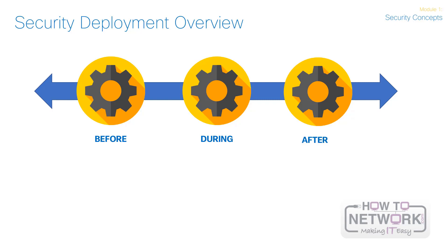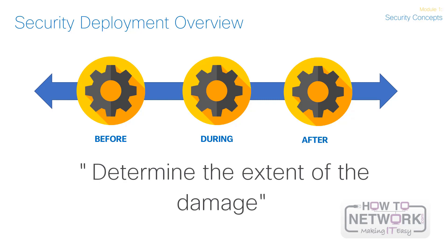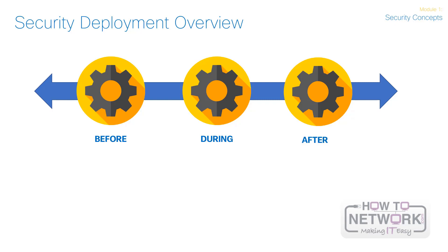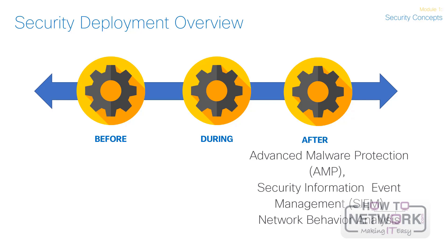The third part is the after phase. Invariably, the attacks will be successful and you will need to determine the extent of the damage to contain the event, remediate it, and bring operations back to normal. You also need to address a wide range of attack vectors with solutions that work wherever the threat can manifest itself. After an attack, organizations can leverage solutions such as advanced malware protection, security information and event management, and network behavior analysis to quickly and effectively contain and remediate an attack to minimize damage. Organizations require approaches that cover the entire attack spectrum and are built to be visibility-driven, threat-focused, and platform-based.